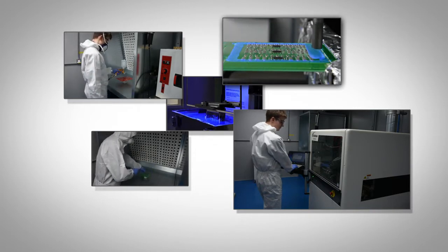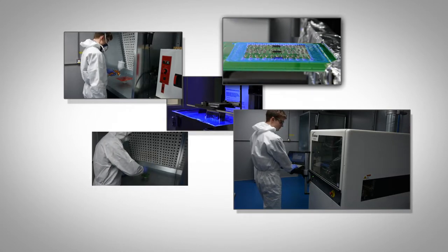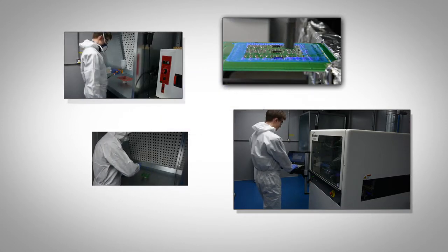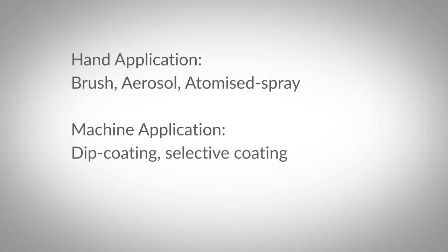It is important then to select the right application method for the coating selected. There are five methods used to apply conformal coatings: hand coating via brush, aerosol or atomized spray gun, or automated dip coating and selective coating machine.